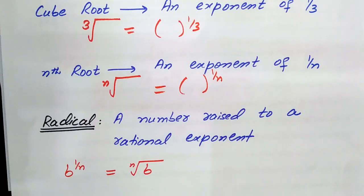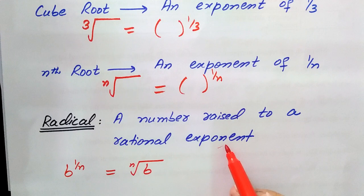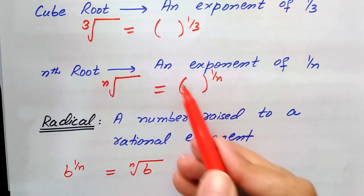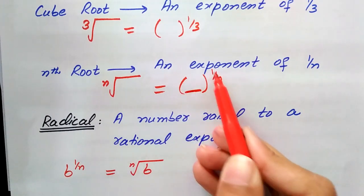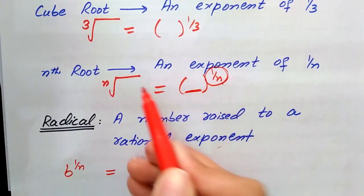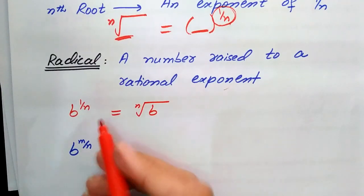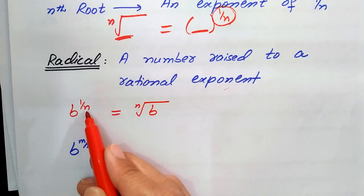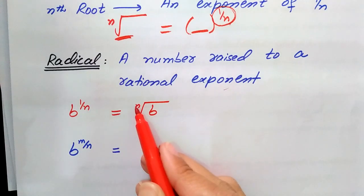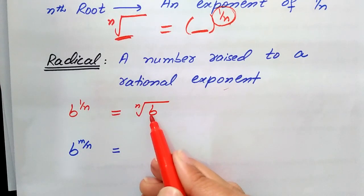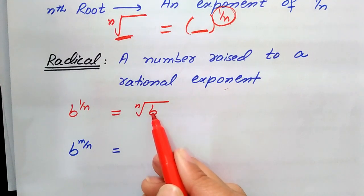A number raised to a rational exponent is called a radical. For example, b raised to power 1/n can be written as the nth root of b.